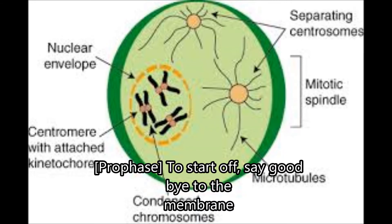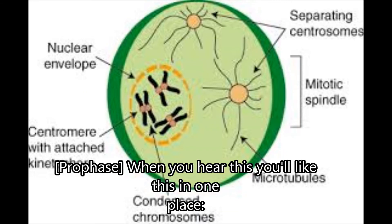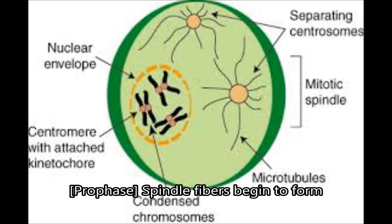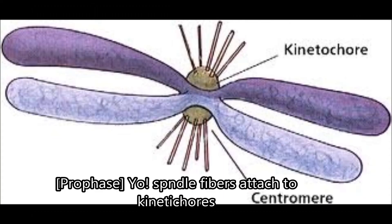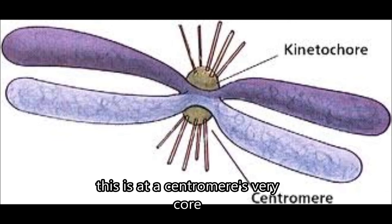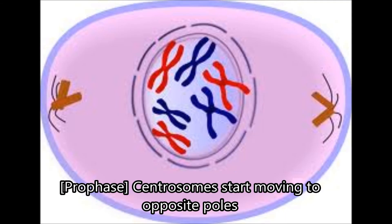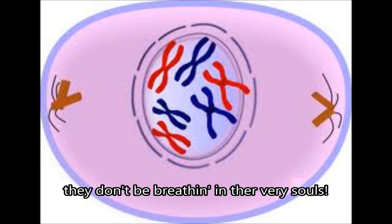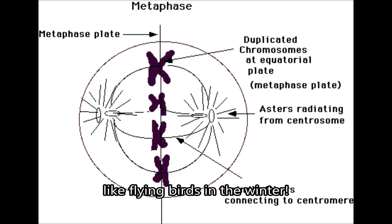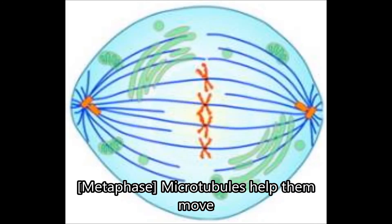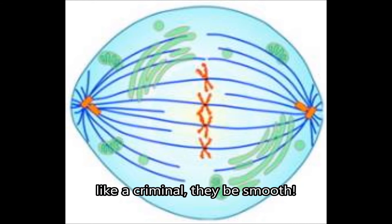Start off, say goodbye to the nuclear membrane. Spindle fibers begin to form — this happens in a hectic storm. Spindle fibers attach to the kinetochore — this is at a centromere's very core. Centrosomes start moving to opposite poles. Chromosomes start moving to the center, like flying birds in the winter. Microtubules help them move — like a criminal, they be smooth.